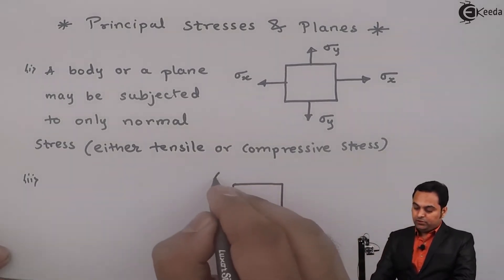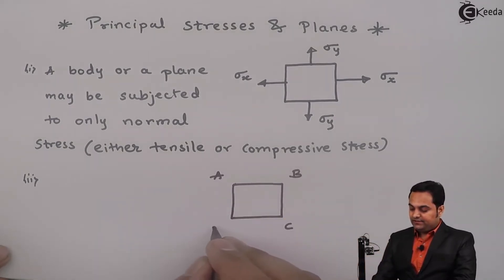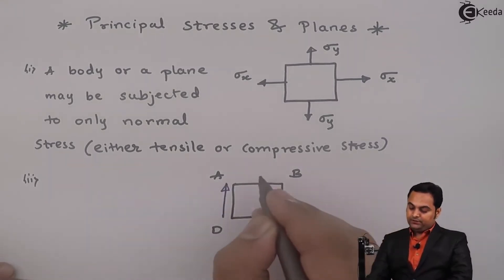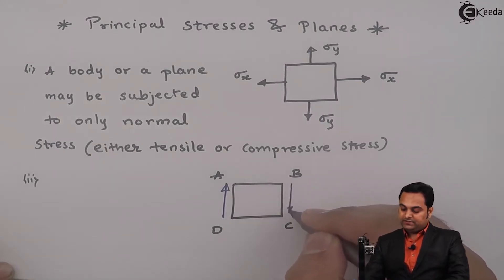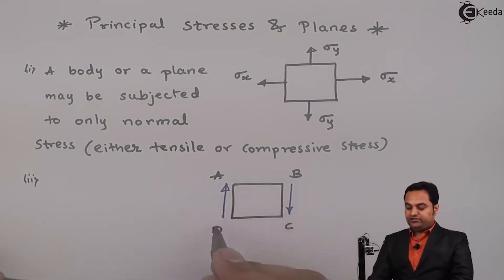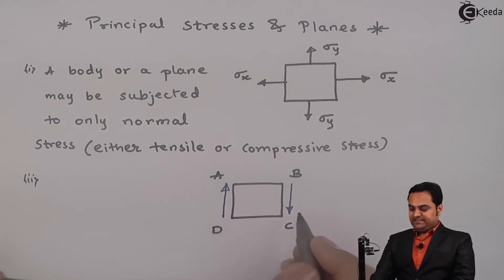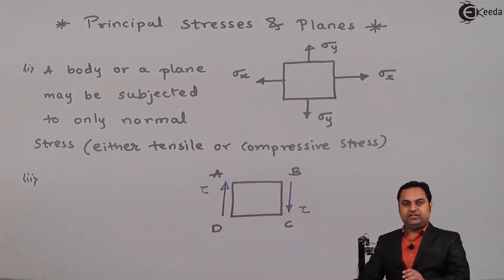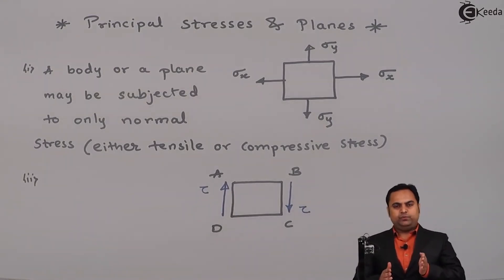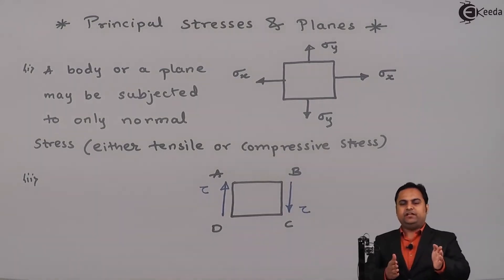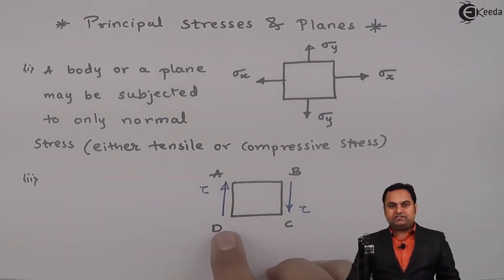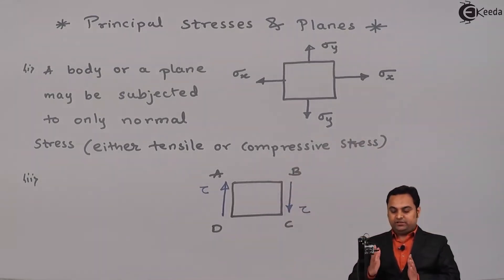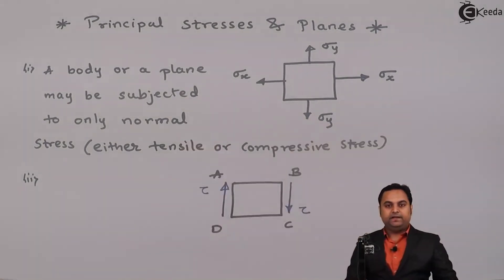If I consider the same plane, call it ABCD, and now instead of normal stress, the nature of the stress would be like this: in two opposite directions — the first stress is acting upward on face AD, and the next stress is acting in a downward direction on face BC. I'll call it Tau. This indicates shearing action because in shear, one force acts in one direction and the other acts in the opposite direction.